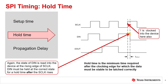Hold time is the time required for a data input to be held at the proper level after the clocking signal. In the diagram, DIN is already set high and then the S-Clock rises to clock in the signal. DIN must stay high for a hold time after the clock rises to ensure that the 1 is properly received.